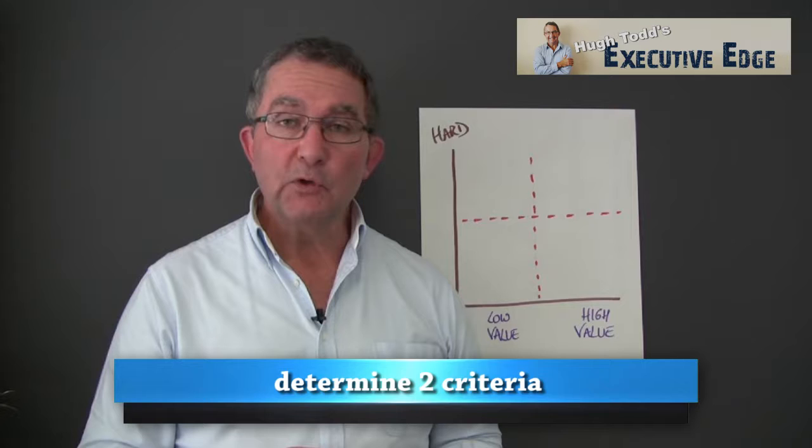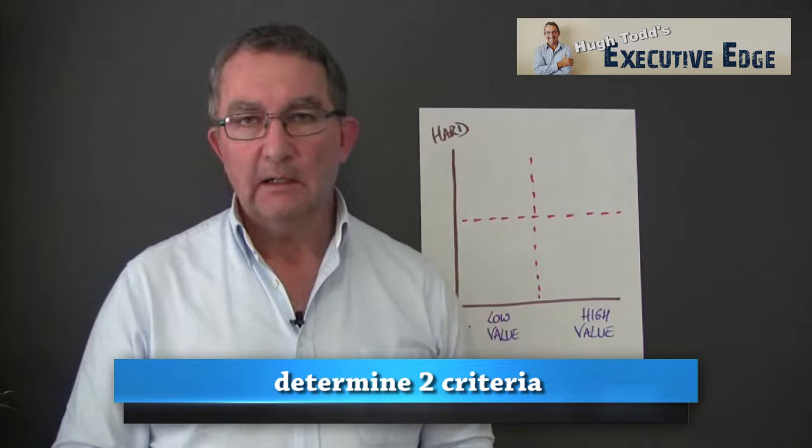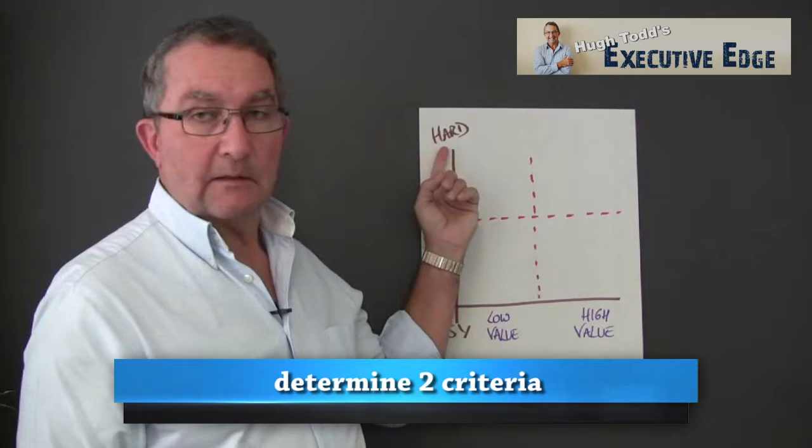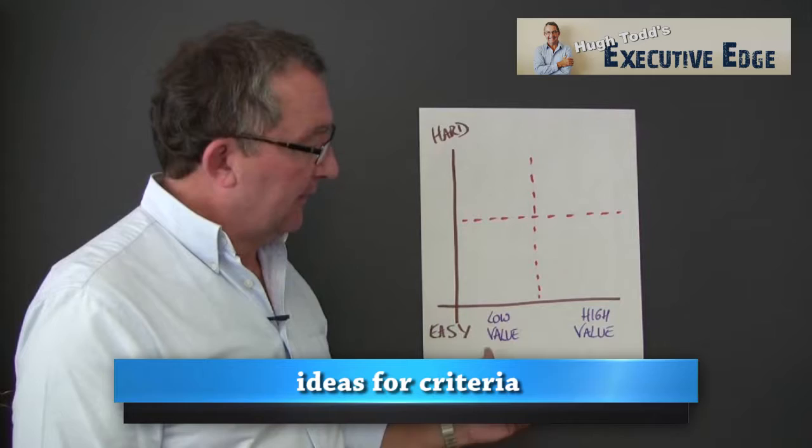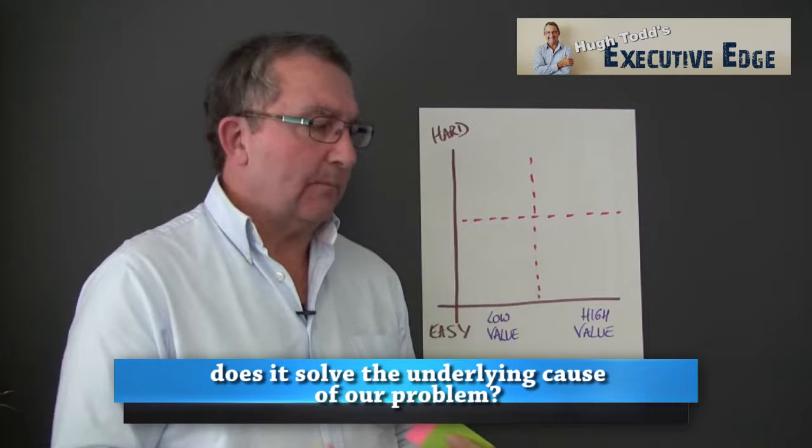First, I suggest that you and the team identify the two most important criteria for choosing. I've got an example here - this may not be the same criteria you choose. What I'm showing is that one criterion is the level of difficulty, from hard to easy. The other criterion I've chosen is low value to high value: how much of a difference is this solution going to add to our organization, to our problem, whatever that may be?